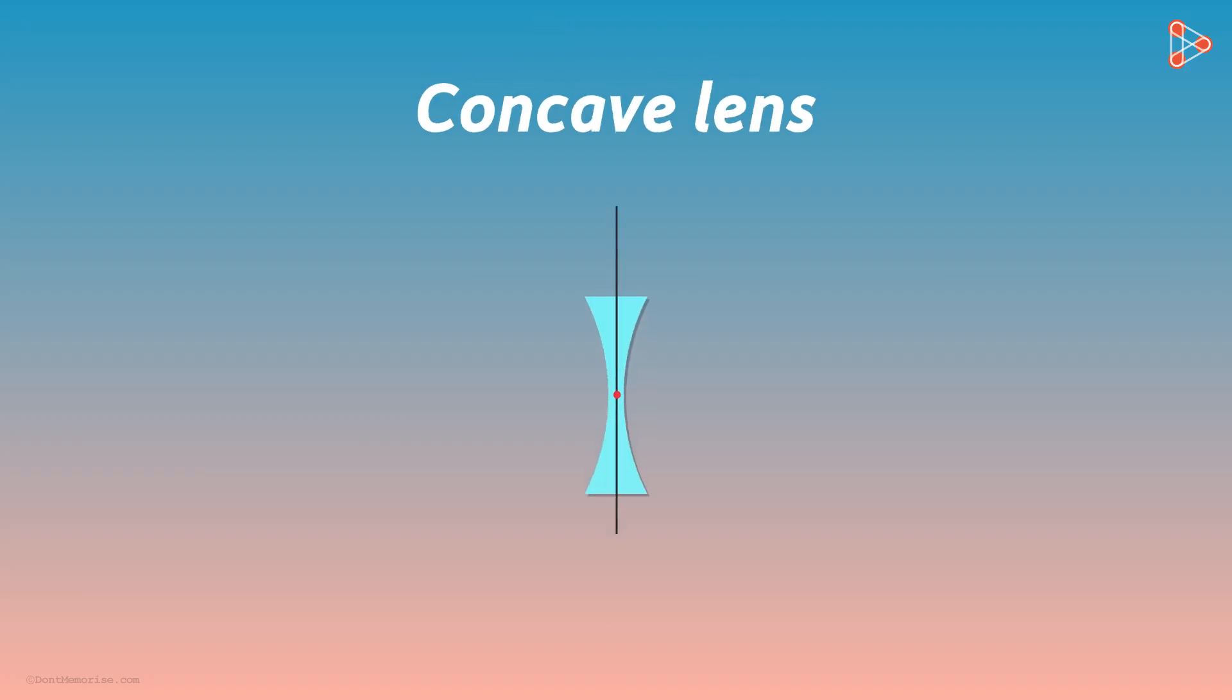It refracts the light in a similar way. A ray of light after entering the concave lens bends towards the normal, and when it again enters air, it bends away from the normal.